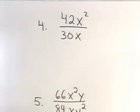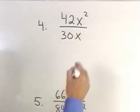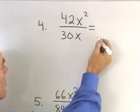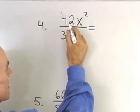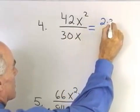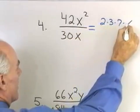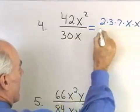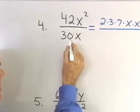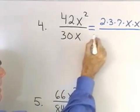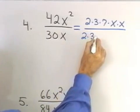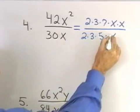I have 42x squared over 30x. I want to reduce that to lowest terms. So, what I'm going to do is factor the numerator. It's 6 times 7, so 2 times 3 times 7. x squared is x times x if I write it in factored form. The denominator is 30, that's 6 times 5, so 2 times 3 times 5 times x.